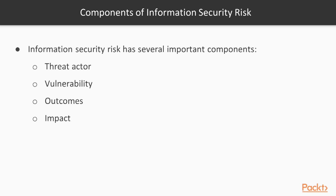Information security risk can be divided into several components. A threat actor or threat factor is a human or non-human entity that exploits a vulnerability. Vulnerability is a weakness in any system. Impact refers to the result after exploitation of any system — what effect it makes. These are some important information security risk components.